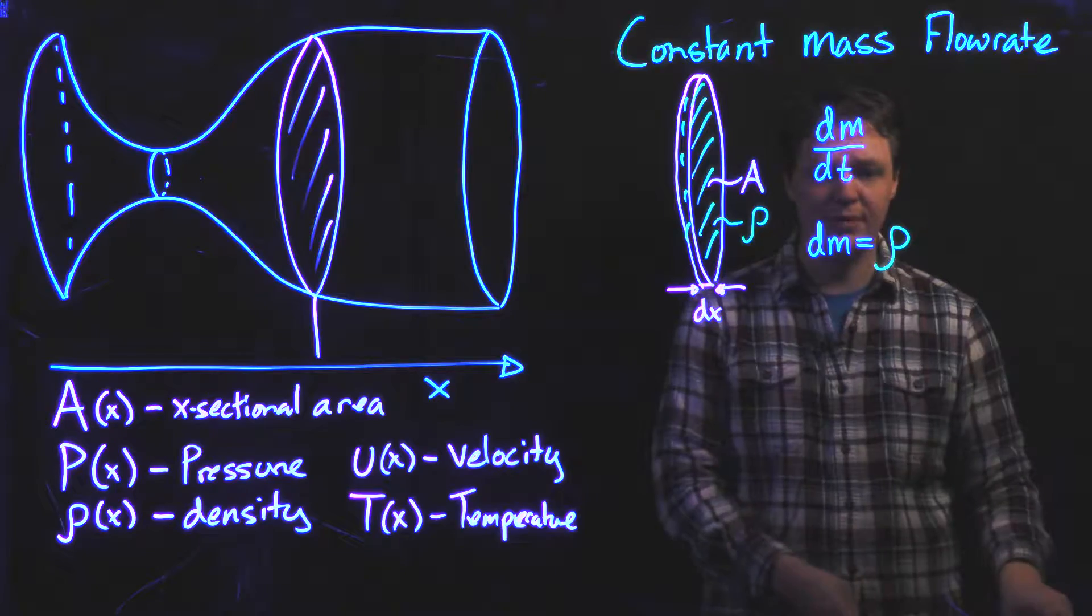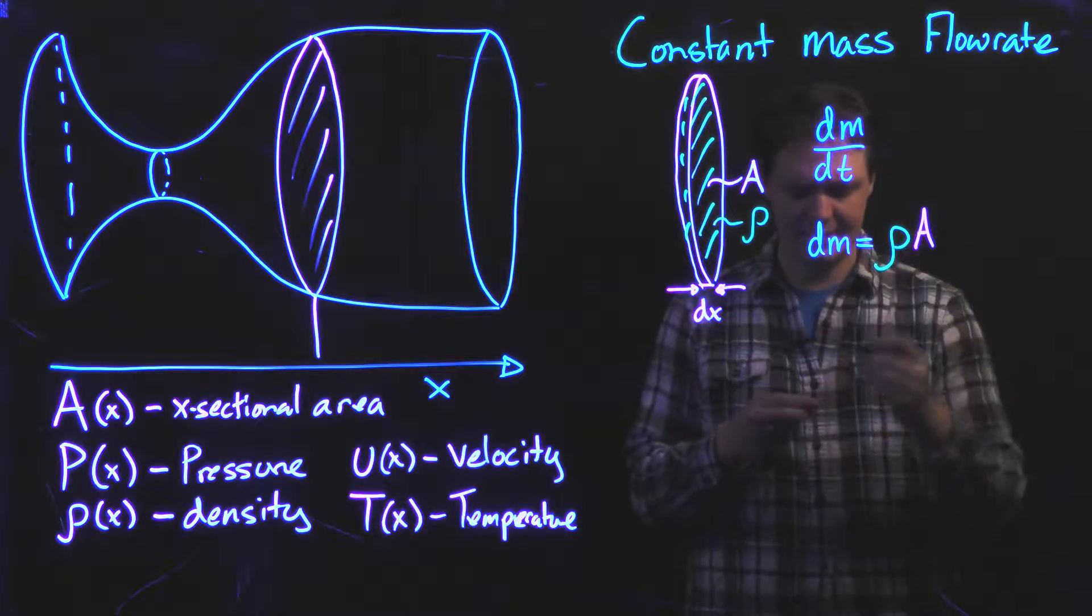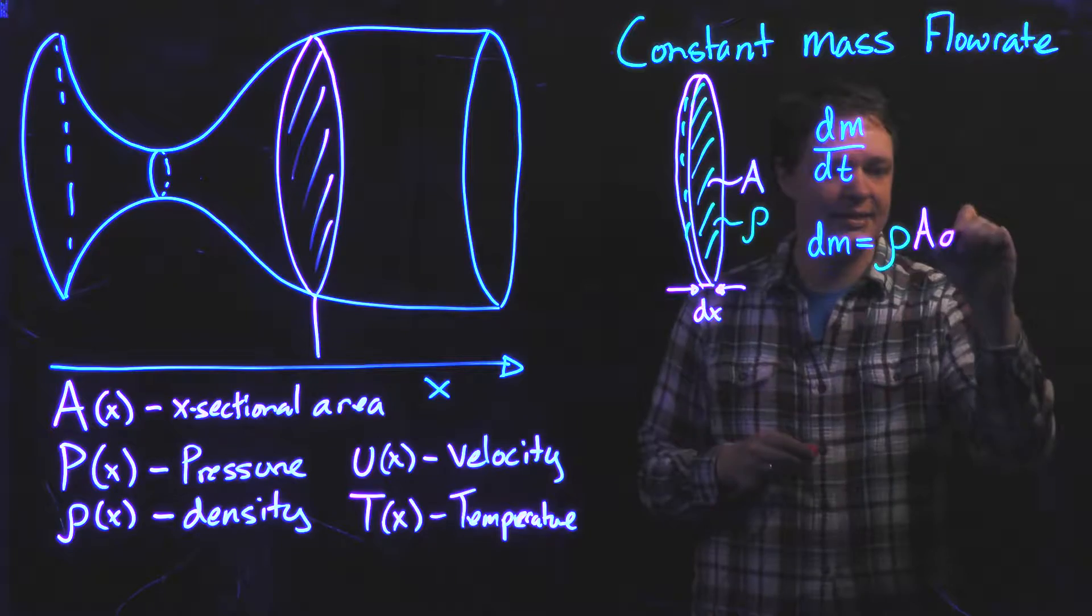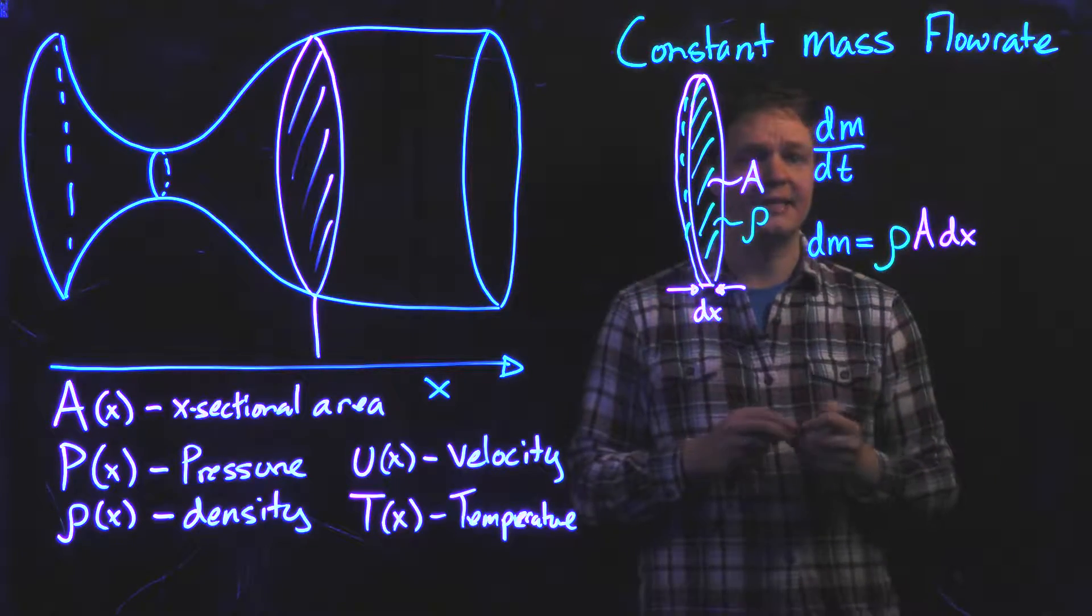I know that when I have density, I can write this as density times that infinitesimal volume. And the volume of a cylinder is the area of a cylinder times the height, dx, of that cylinder.